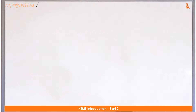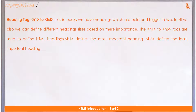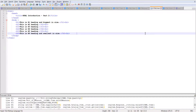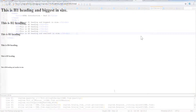Now let's consider some other tags. Heading tags: as in books, we have headings which are bold and bigger. In HTML also we can define different heading sizes based on their importance. The h1 to h6 tags are used to define HTML headings. h1 defines the most important heading and h6 defines the least important heading.